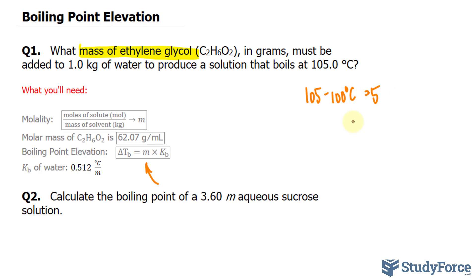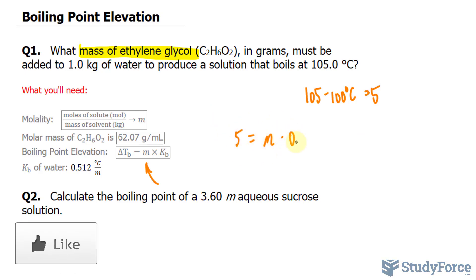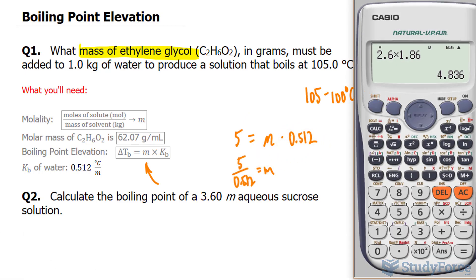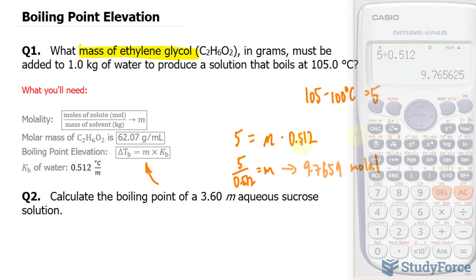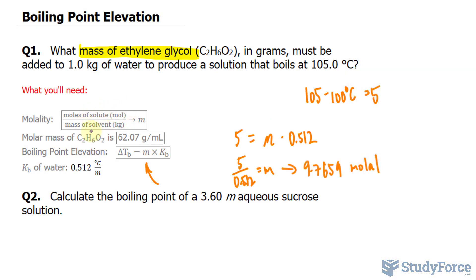So we can find the molality of ethylene glycol by rearranging this formula. 5 is equal to little m times 0.512. Dividing both sides by 0.512, we end up with 5 divided by 0.512, which is 9.7659. And remember that molality is a measure of moles of solute per mass of solvent, so this is technically 9.7659 moles of the solute per 1 kilogram of the solvent.